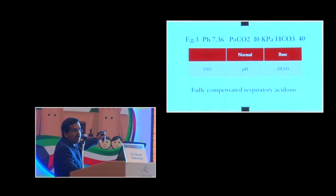Another sample, and I will stop here. The pH 7.36, PaCO2 10, and bicarbonate 40. The pH is in the normal column, the CO2 is in the acidic column, and the bicarbonate is in the base column. So this is a fully compensated respiratory acidosis. Do I have some time for some more examples?